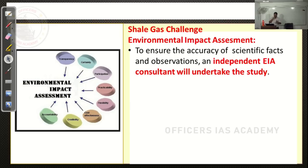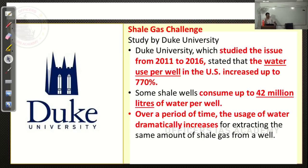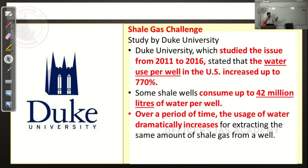This assessment will generally be made by an independent regulator — an environmentalist or ecologist who submits the report. A recent study by Duke University studying hydrocarbon exploration from 2011 to 2016 stated that water use per well in the USA has increased by 770%. Some shale wells demand around 42 million liters of water — compared to the average 5 to 9 million liters.